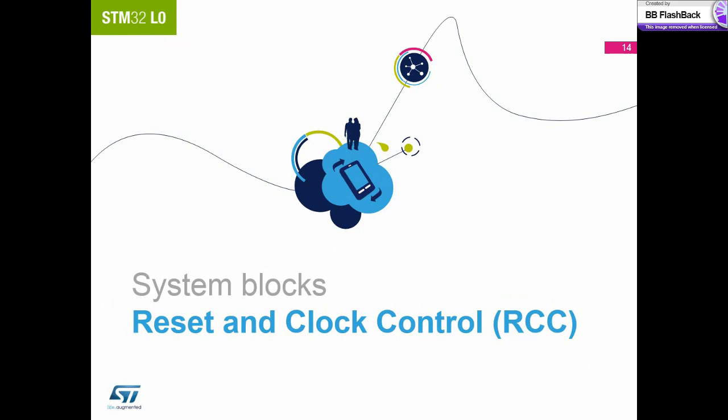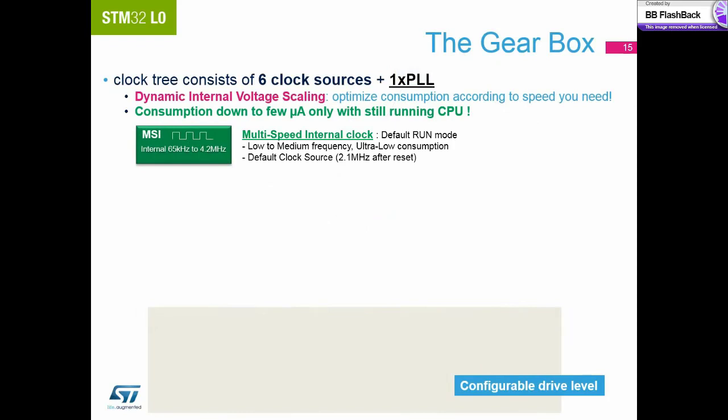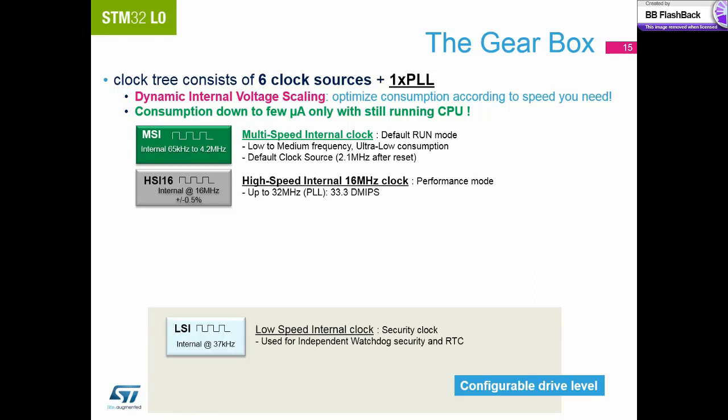The reset and clock control is a key system block within the STM32L0. The clock tree of the STM32L0 is like a gearbox containing six different clock sources. The multi-speed internal clock is the default clock source and is used for low to medium frequencies with very low power consumption. Then we have the other two internal clock sources: the HSI or high speed internal for running the device at full speed, and the low speed internal for running the watchdog and the RTCs.